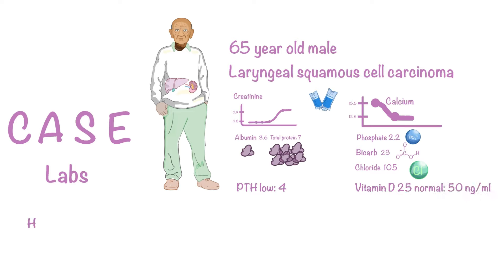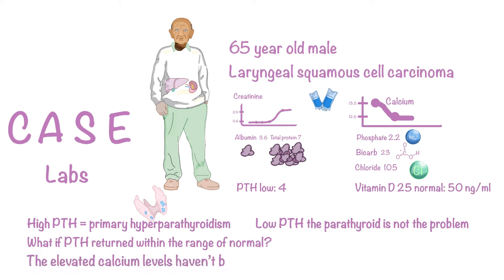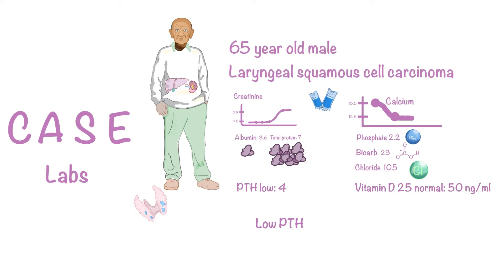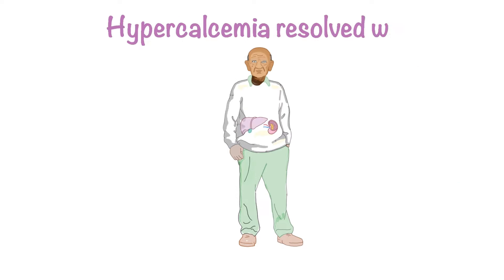Based on everything noted so far: high PTH equals some form of hyperparathyroidism, and with low PTH the parathyroid is not the problem. However, what if the PTH returned within the normal range? This is a dilemma we must be careful with — when a quote-normal lab value is actually abnormal given the context, like a normal hemoglobin in someone with long-standing renal or heart failure. In this context, we must recall that elevated calcium levels should have suppressed the PTH, so a normal PTH actually points to some form of hyperparathyroidism. A low PTH helps us zero in on PTHrP and bony tumors.